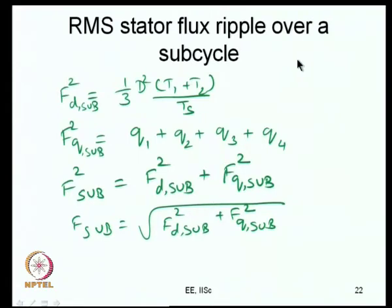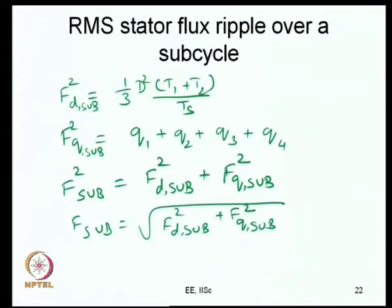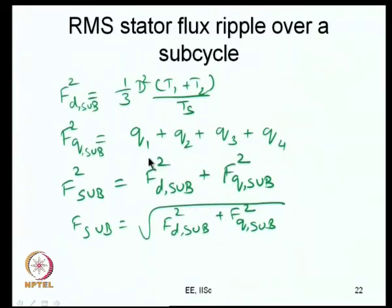Let us be more specific. The terms involve T1, T2, Q1, Q2, Q_z, D, and T_s. Let us take a look at what those values are. T1, T2, and T_z are the dwell times: T1 is the dwell time of active state 1, T2 of active state 2, and T_z of the null state.